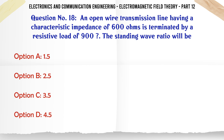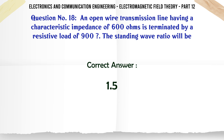An open wire transmission line having a characteristic impedance of 600 ohms is terminated by a resistive load of 900 ohms. The standing wave ratio will be: A. 1.5, B. 2.5, C. 3.5, D. 4.5.